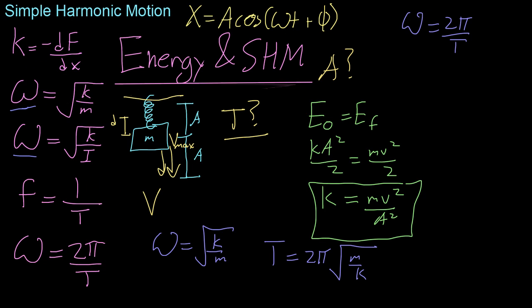Now, all we have to do is plug in that k value, and we get that T equals 2 pi times the root of m a squared over mv squared. The m's cancel out, and we get that the period of oscillation is 2 pi a over v.